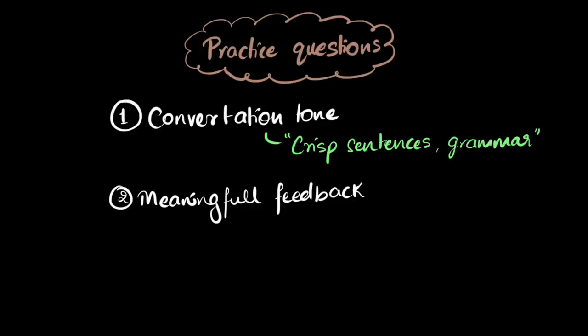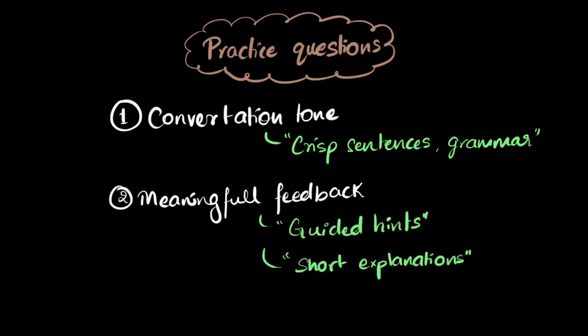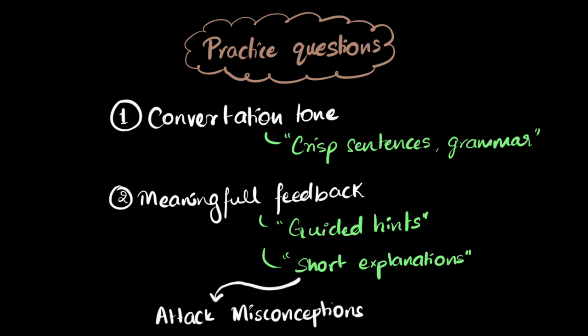The thing about misconceptions is, if you just tell people what the right answer is, it won't go away. You need to first start by telling them why it is wrong. So in our options, it's important to mention why the wrong option is wrong, which means we have to think about the wrong options carefully. We try not to confuse learners by giving tricky wrong options. Instead, we genuinely want to give options where we think people can go wrong, and then provide explanations for why they are wrong. Part of giving meaningful feedback is providing guided hints and short explanations for why options are wrong or right, with the hope that this can attack misconceptions really hard, allowing learners to master their concepts.